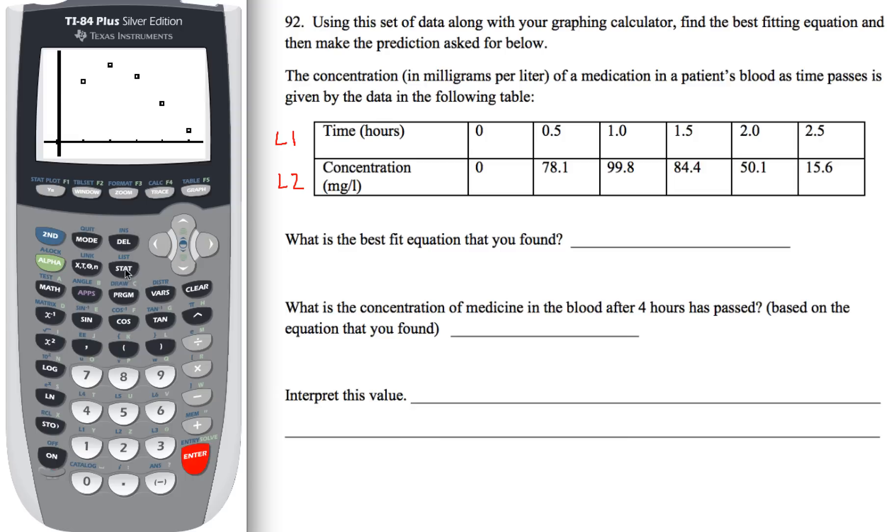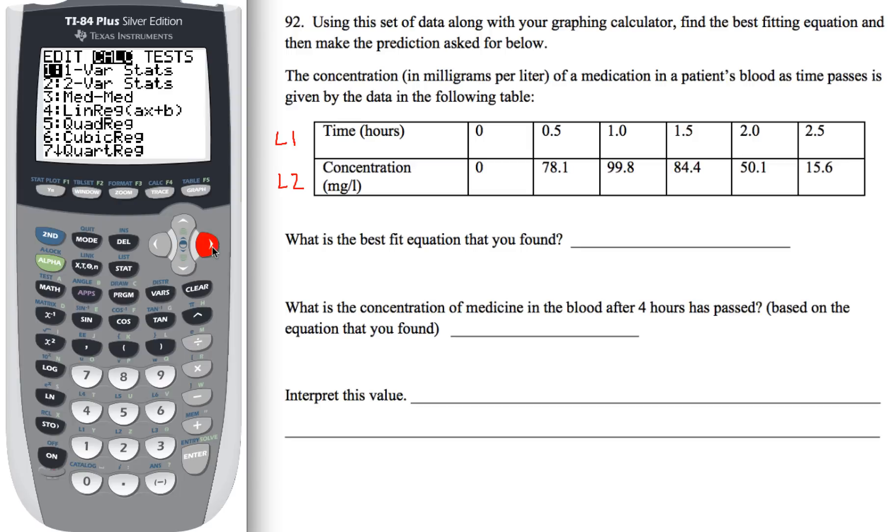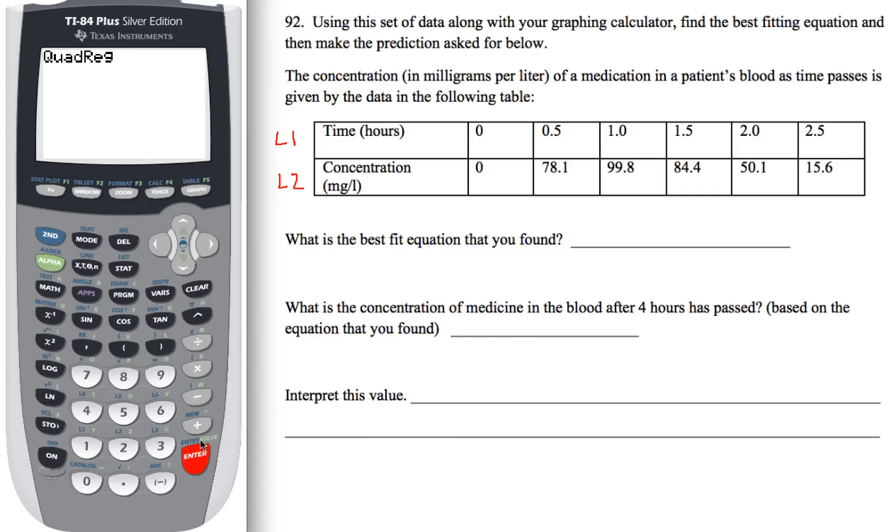To come up with a best fit equation, I'm going to go back to my stat menu, and then I'm going to arrow over to calc. Since I know that it's shaped like a quadratic, I'm going to go down to number five, quadratic regression. Instead of just hitting enter right off the bat, what I want to do is go ahead and type in where the data is coming from and where I want the calculator to put the data or the equation that it comes up with. What I'm going to do is go ahead and hit second and then number one because that's where my x's are coming from. Then I'm going to hit comma, which is right above the seven. Then I'm going to hit second and L2 because that's where my y's are coming from. Comma again.